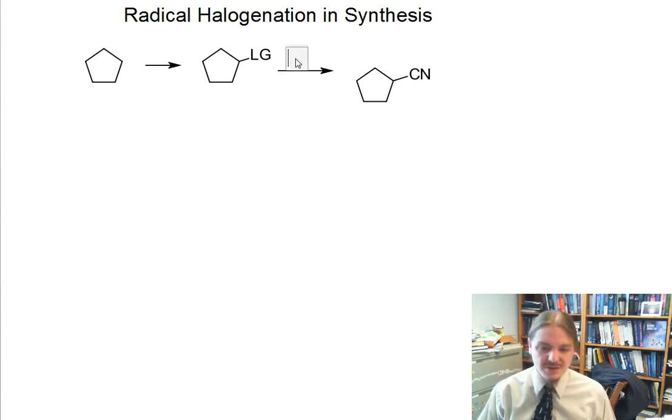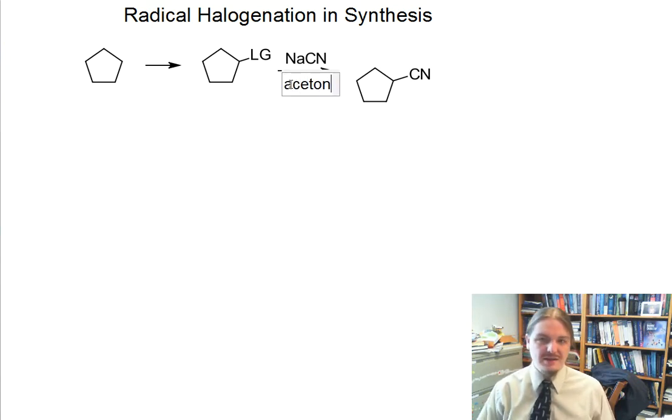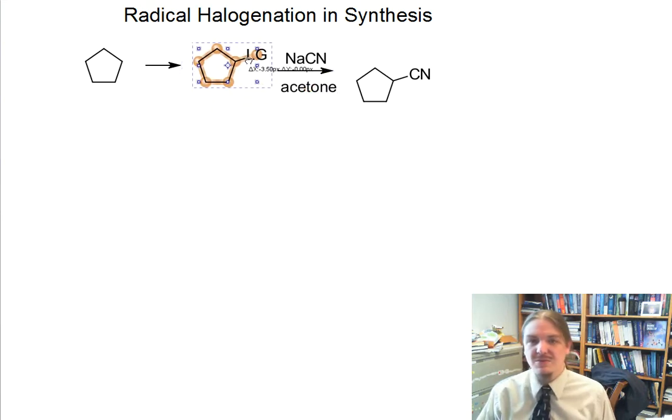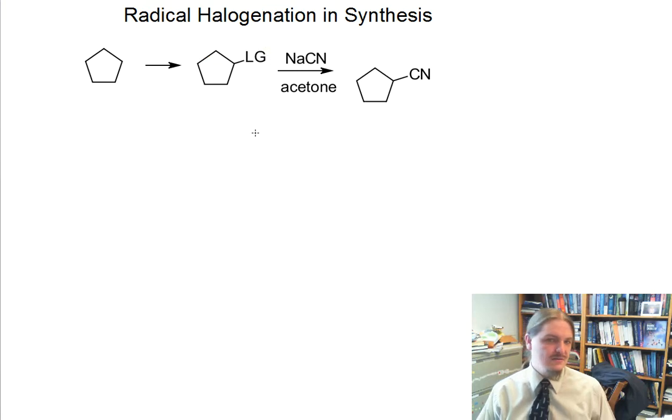Maybe what we're interested in is doing some kind of substitution, like putting a cyanide group or nitrile functional group there, and that's going to require a leaving group. We're going to do an SN2 reaction but we don't actually care what this leaving group is as long as it's a good leaving group, and the halogens are good leaving groups.